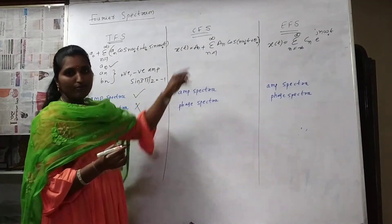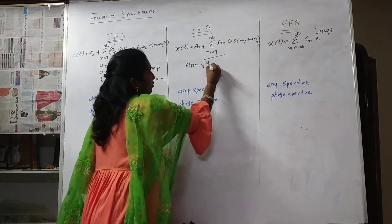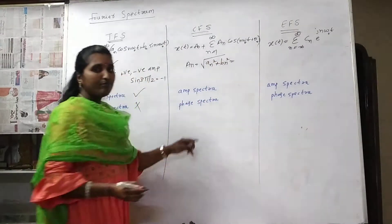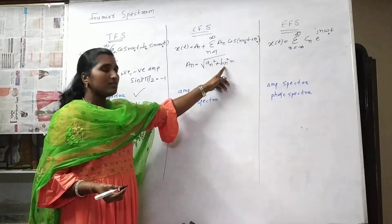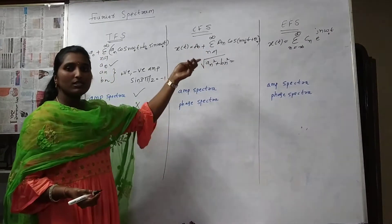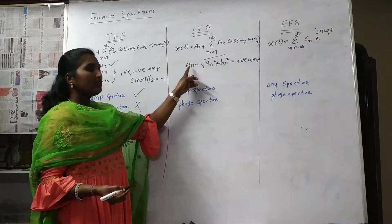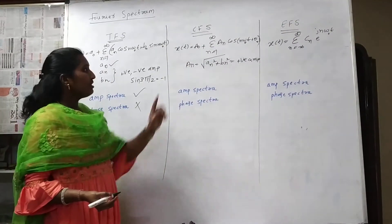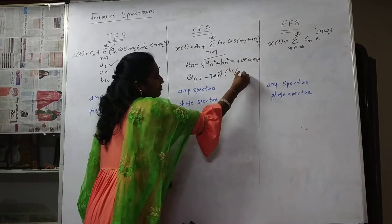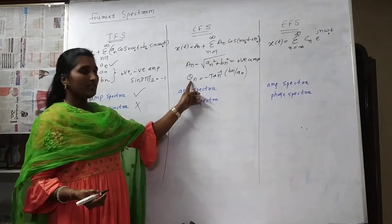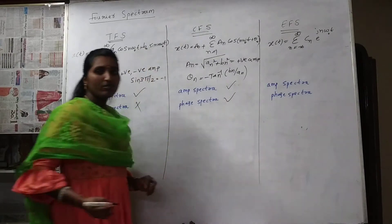For the cosine Fourier series, aN equals the square root of aN² + bN², which always gives positive amplitude only, not negative. The phase angle θN can be calculated as minus tan inverse of bN/aN. Therefore, for the cosine Fourier series, both amplitude spectrum and phase spectrum exist.